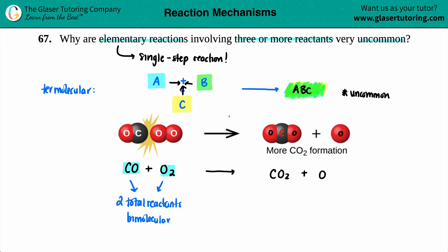They have to come together in a specific orientation to make your product. That's not very probabilistic. So in this case, why is it very uncommon? Because there is a low probability for all reactants to come together with the proper orientation and energy.